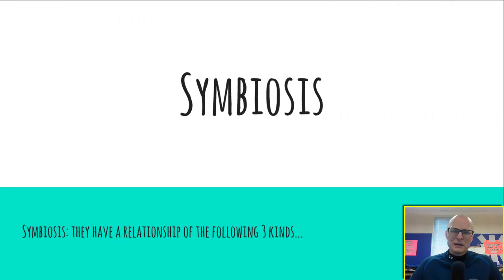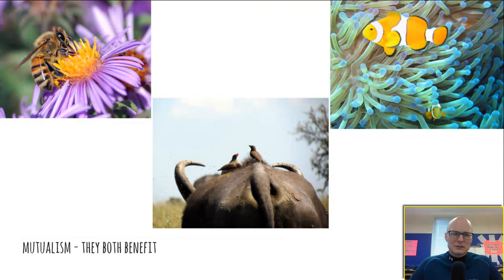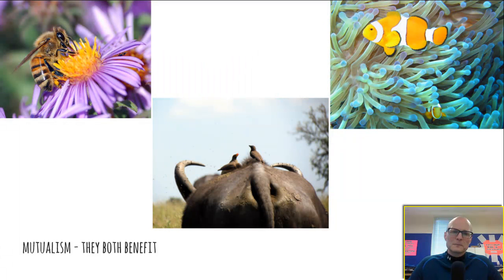Then there's symbiosis, which comes in three different forms. Mutualism — both organisms benefit. For example, the honeybee benefits by getting food, and the flower benefits by being pollinated so it can reproduce.